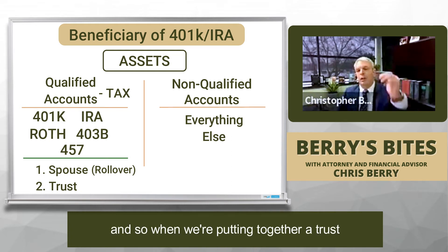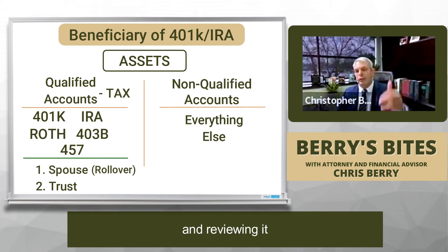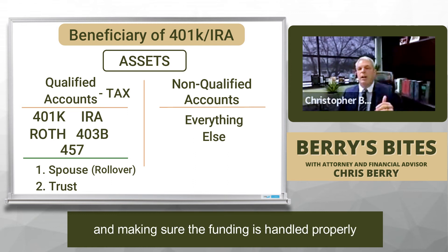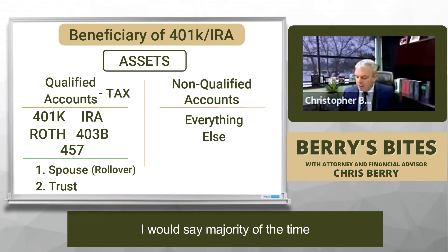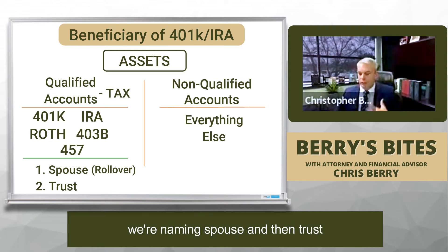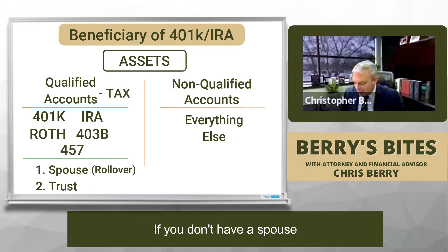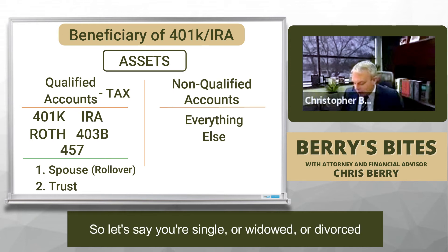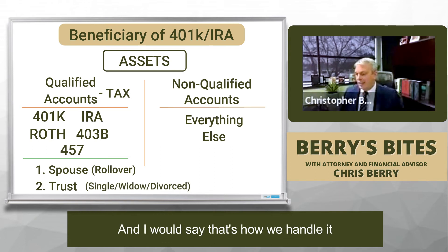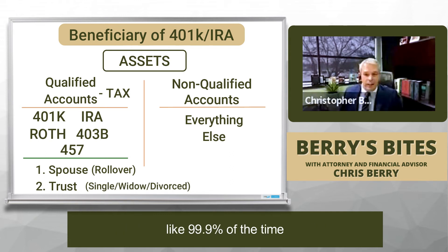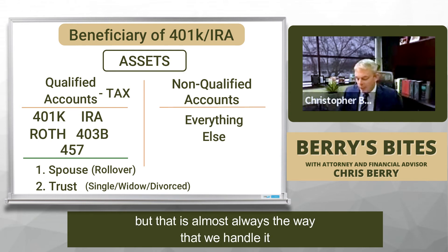When we're putting together a trust, reviewing it, and making sure the funding is handled properly and retitling those assets, a majority of the time we're naming spouse and then trust. If you don't have a spouse — say you're single, widowed, or divorced — then we would almost always name the trust as beneficiary. I'd say that's how we handle it 99.9% of the time, with certain exceptions.